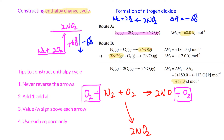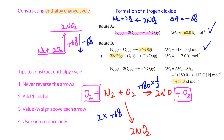Tip three: write the enthalpy values with their signs above each arrow. For example, N₂ + O₂ → 2NO has ΔH = +180, so write +180 above that arrow. For N₂ + 2O₂ → 2NO₂ with ΔH = +68, write +68 above its arrow. This helps you do the math correctly. Remember, above every arrow, write the corresponding enthalpy change, including any multiplications by two or by half. Also, every equation should only be used once — tick it off after use.